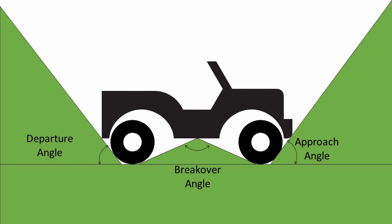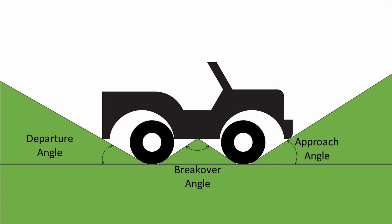A vehicle with a longer wheelbase will have better approach and departure angles, assuming the body length stays the same, but the break-over angle will be worse. Conversely, making the wheelbase shorter by pulling the axles in closer to the centre gives a better break-over angle, but approach and departure angles will be much worse. Longitudinal stability will also be worse — it'll be more likely to tip forwards or backwards — but the vehicle will be more manoeuvrable.